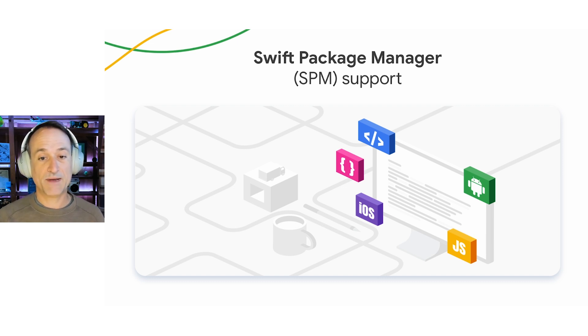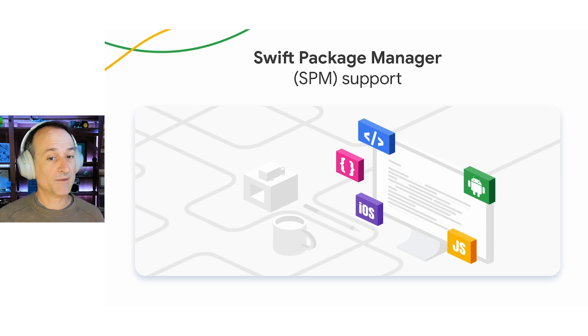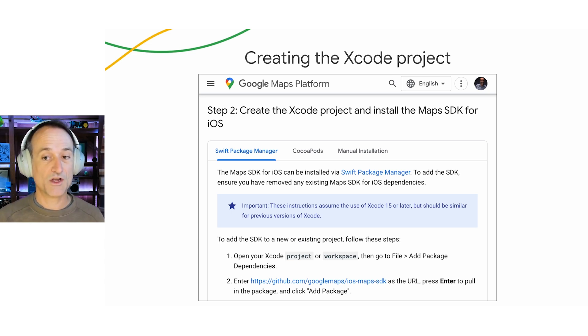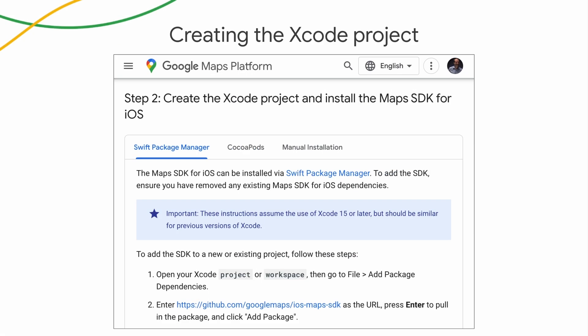With Xcode's integration of Swift Package Manager as the primary way to add packages to iOS projects, this provides easier maintenance of dependencies when using Google Maps Platform SDKs for iOS. The ability to install and maintain Maps Platform SDK dependencies through Swift Package Manager is one of the most common feature requests we hear from our developers. With direct integration in the Xcode IDE, you can add package dependencies to your iOS projects simply by adding the URL for the corresponding SDK's GitHub repository. Swift Package Manager in Xcode also allows you to specify package versions, which match the versions of the corresponding SDKs.